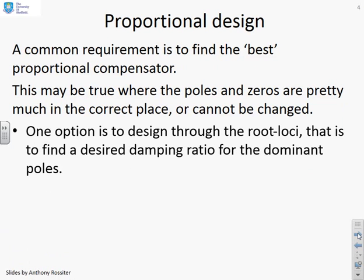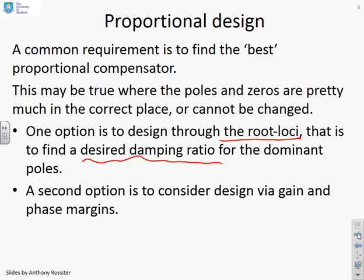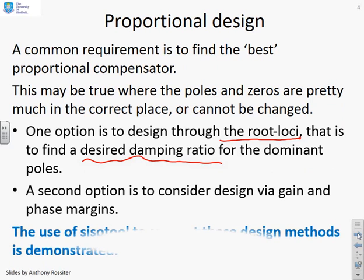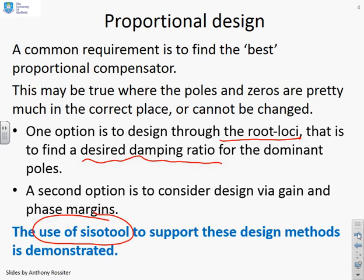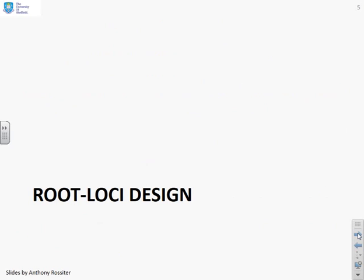We're going to look at two options. One option is to design through root loci, where you aim at finding a desired damping ratio for the dominant poles. The second possible design is via gain and phase margins. We're going to demonstrate the use of CISOTOOL to support these design methods.